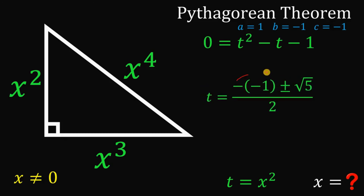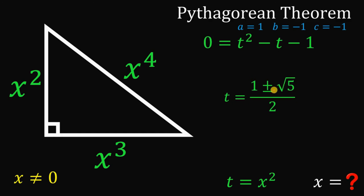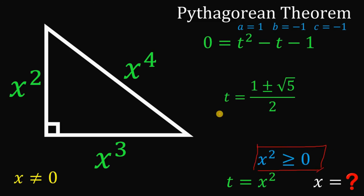Negative of negative 1 is positive 1, so t equals 1 plus or minus square root of 5, all over 2. But since t equals x squared and x squared must be greater than or equal to 0, t cannot be negative. Therefore, we discard the negative value — 1 minus square root of 5 over 2 — leaving t equals 1 plus square root of 5 over 2, the famous Golden Ratio.